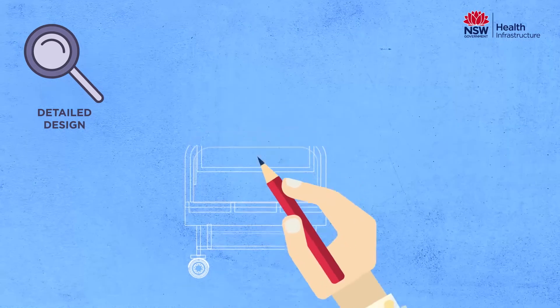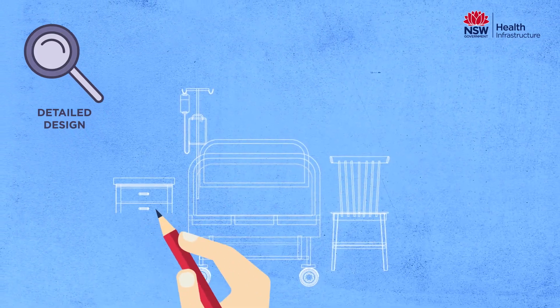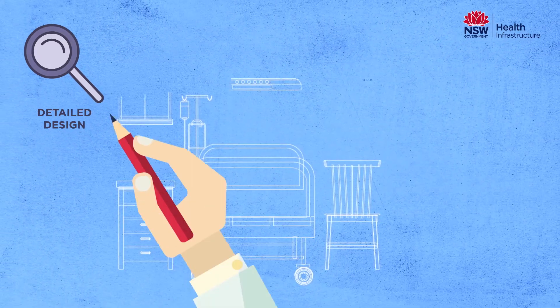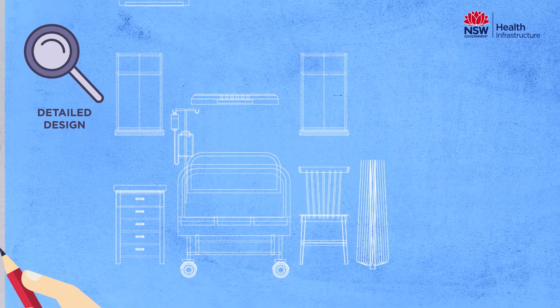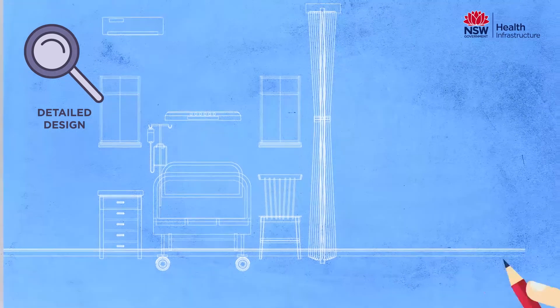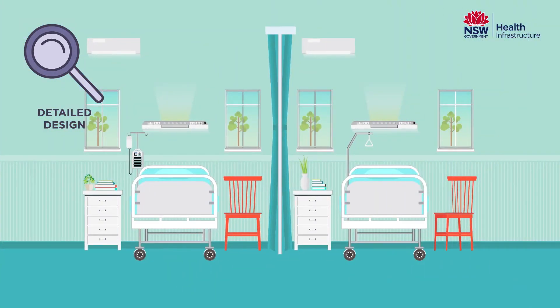During detailed design, the user groups look at the layout of every room and hospital space, such as the location of furniture, fittings and room colours, as well as the external facade and outside spaces.